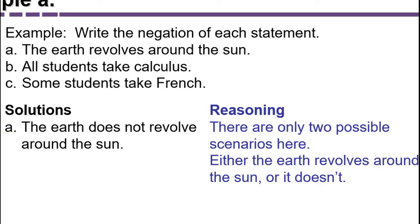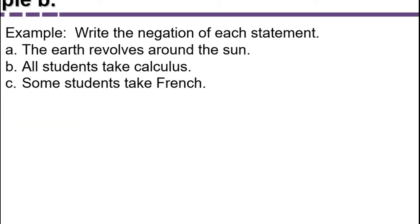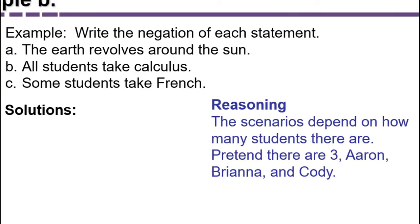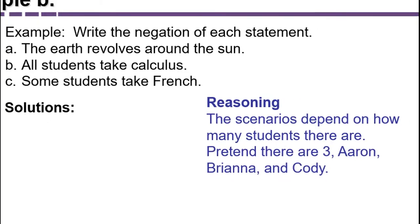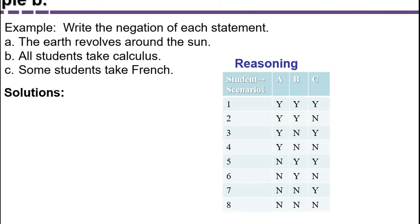Part B involves various scenarios. To help us think about it, suppose there were three students. Let's list all the scenarios for those three students taking or not taking calculus. A 'Y' means yes, they're taking calculus, and an 'N' means no. We have students A, B, and C.